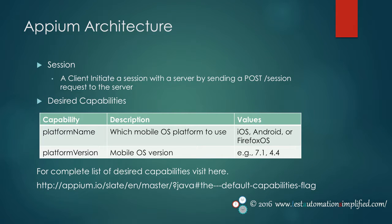There are two more important concepts you need to understand: session and desired capabilities. Remember, automation is always performed in the context of a session. The client initiates a session with the server in a way specific to each library, by sending POST session requests to the server. Desired capabilities are a set of keys and values sent to the APM server to tell the server what kind of automation session we are interested in starting up.